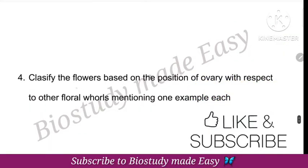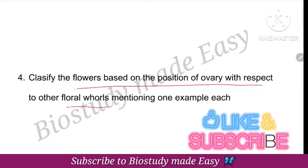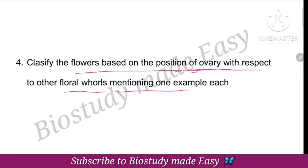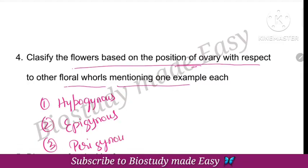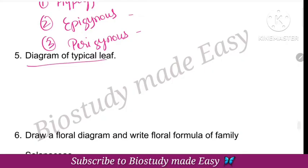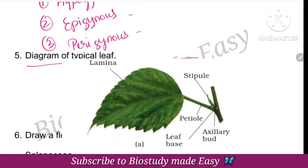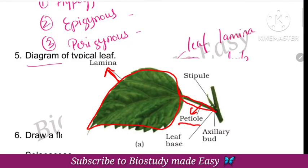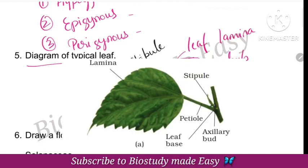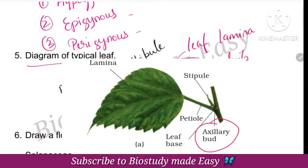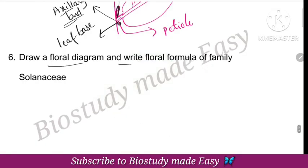Phyllotaxy and venation are very important topics. Next question: classify the flowers based on the position of the ovary with respect to the floral whorls, mentioning examples. Based on the position of the ovary, flowers are classified as hypogynous, epigynous, and perigynous, with examples.